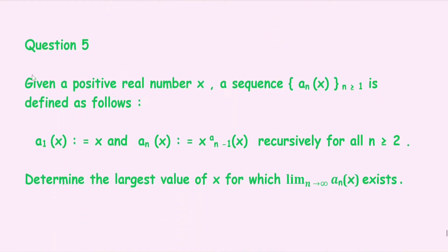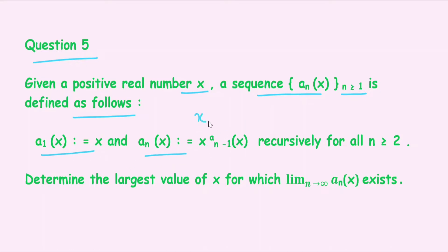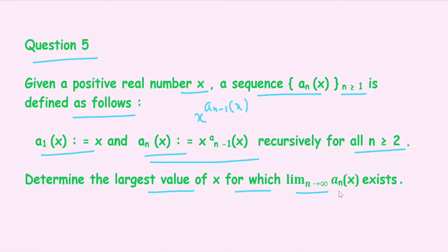Question number 5 says: given a positive real number x, a sequence {a_n(x)} for n ≥ 1 is defined as follows: a₁(x) = x and a_n(x) = x^(a_{n-1}(x)) — this is the recursive relation for all n ≥ 2. Then determine the largest value of x for which the limit as n tends to infinity of a_n(x) exists.